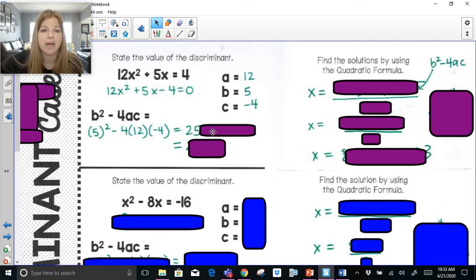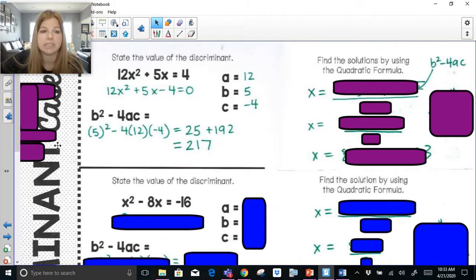5 squared is 25. Don't bring over any signs ever. Just multiply it. Negative 4 times 12 is negative 48, and negative 48 times negative 4 gives you positive 192. 25 plus 192 is 217.